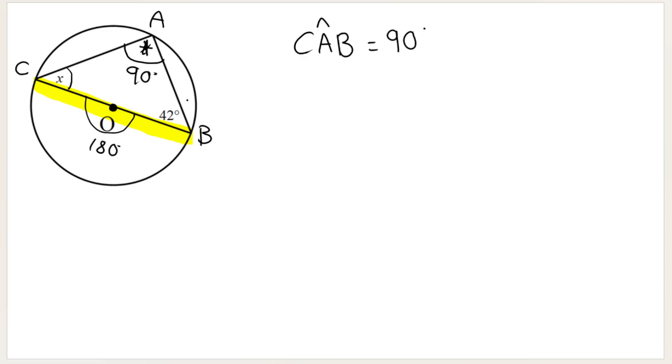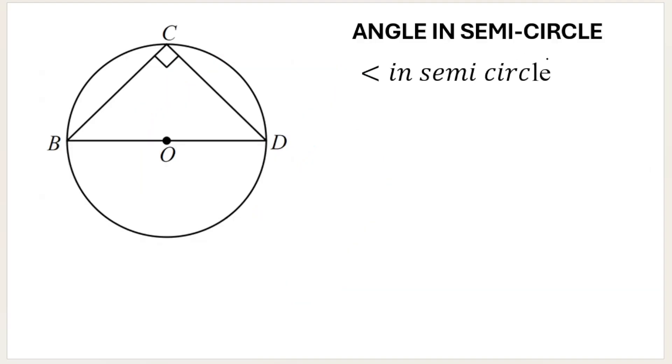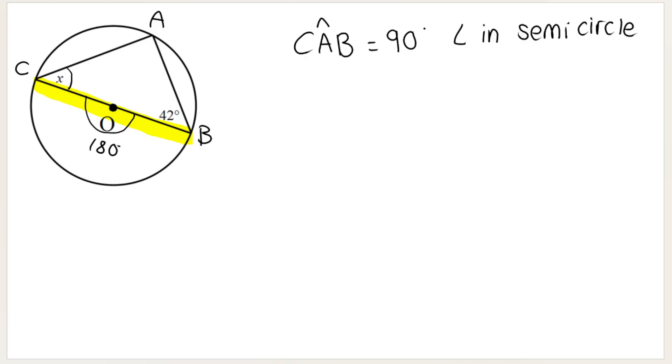And what would your reason be? As I said earlier, it can either be angle at center equals two times angle at circumference, or we can go with our new reason, angle in semicircle. So then if we know that this one is 90, I'm looking for X, you can see that CAB is a triangle, so X plus 90 plus 42 would give me 180. Angle sum triangle. So X is 48 degrees.